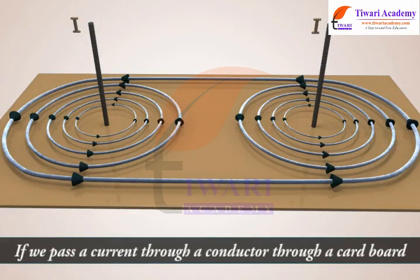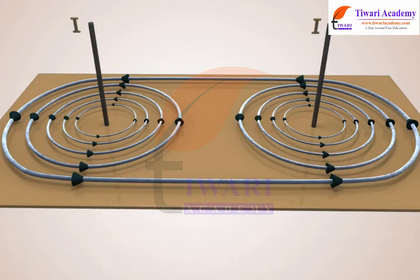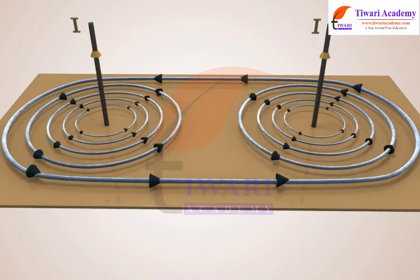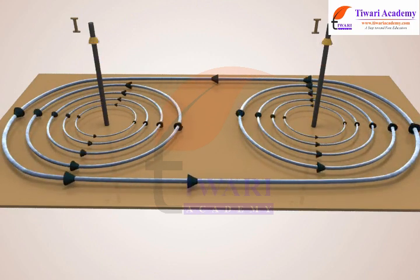If we pass a current through a conductor through a cardboard, we shall get the magnetic lines. These are all closed circles and concentric with the conductor.